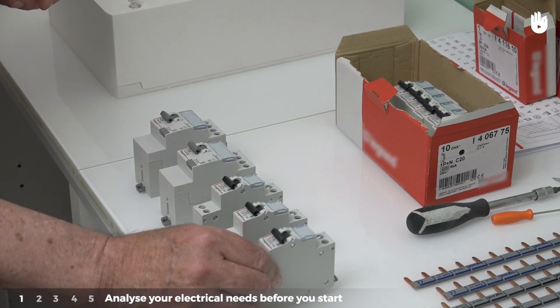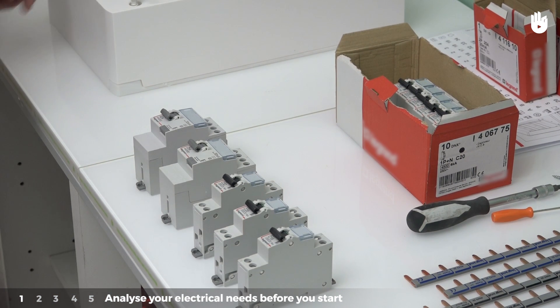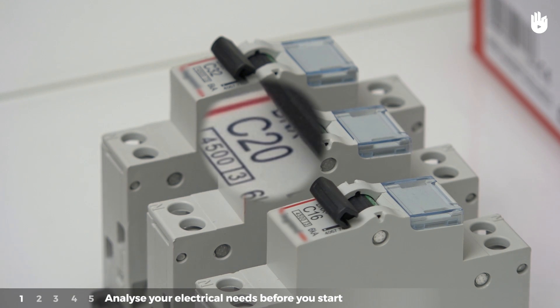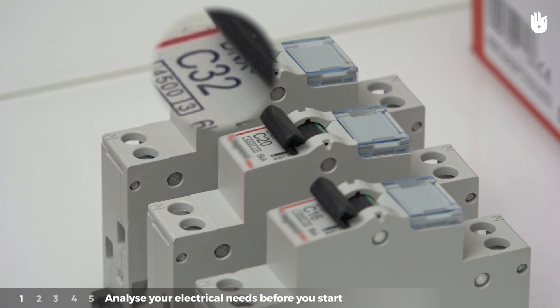These individual circuit breakers are calibrated according to the circuits they will protect: 16A for lighting, 20A for outlets or domestic appliances like washing machines, 32A for a hot plate or electric stove.